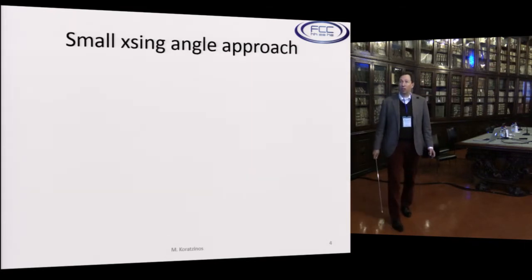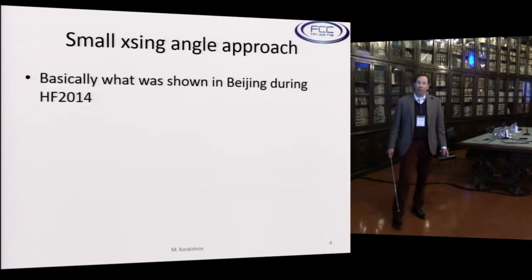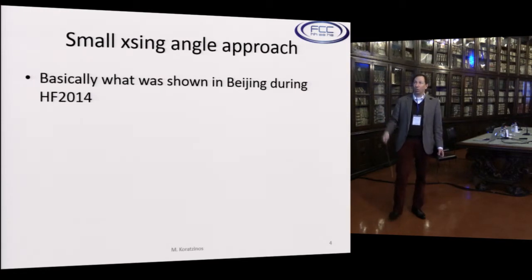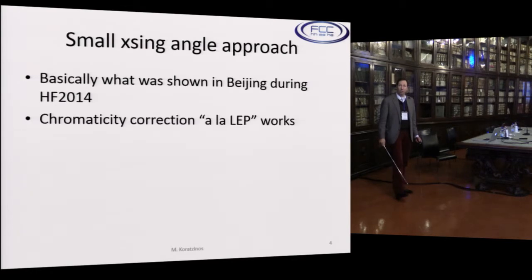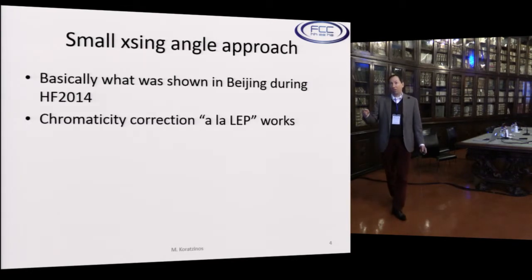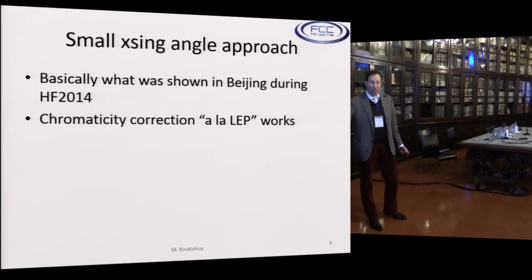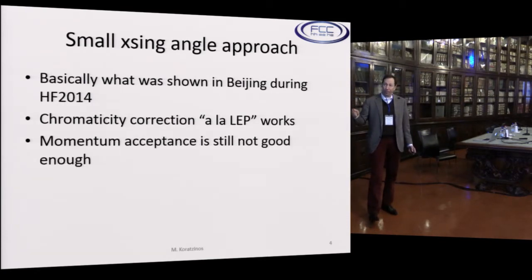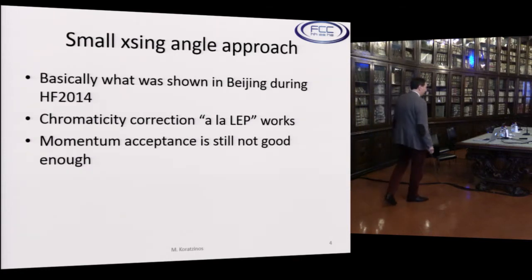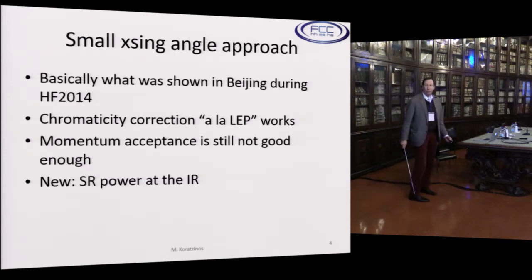Let's start with the small crossing angle approach. Basically, there's not a lot of progress happening there — what was shown in Beijing during last year is still valid. The good news is that the chromaticity correction, which I'm going to show a plot a la LEP, seems to work. The momentum acceptance, which I'm going to show again, is still not good enough.